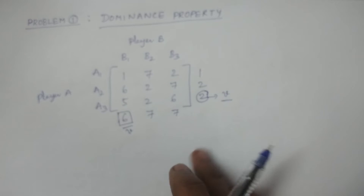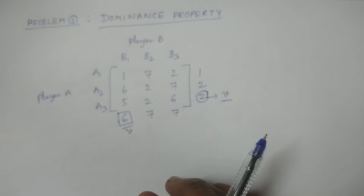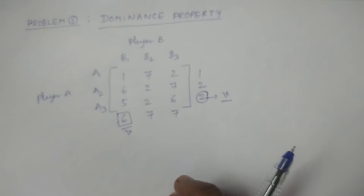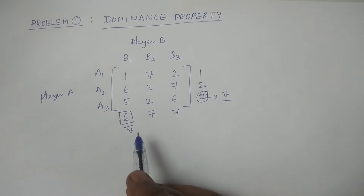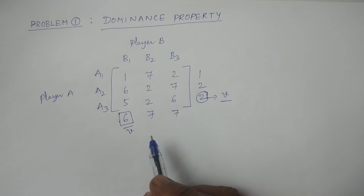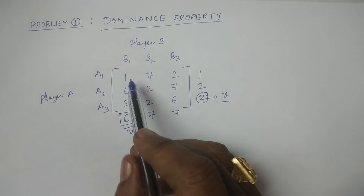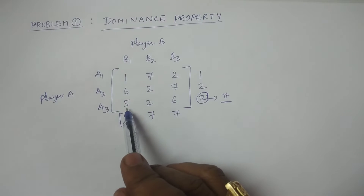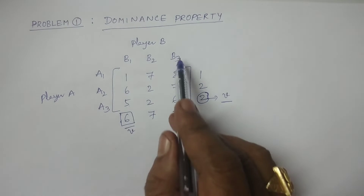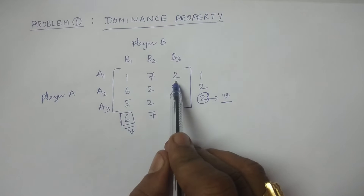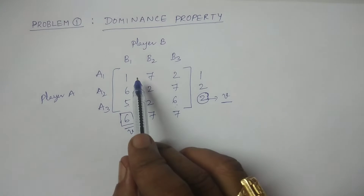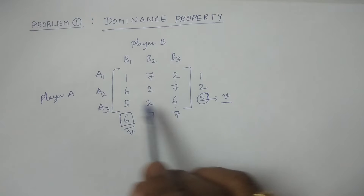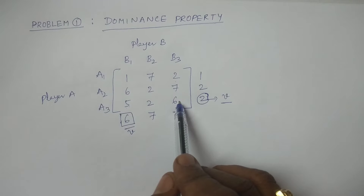For Player A, the rule involves maximum gain and minimum gain. For Player B, we compare columns B1 and B3: 1 less than 2, 6 less than 7, 5 less than 6. All the elements in B1 are less than or equal to all the elements in B3, so B1 dominates B3. Therefore, delete B3.